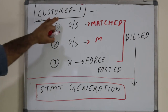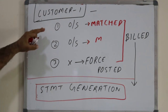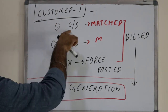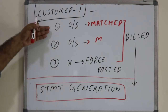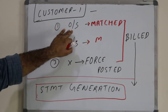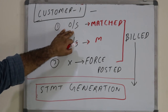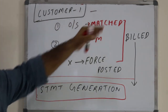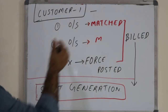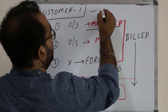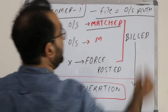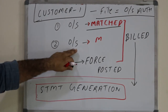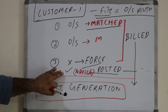When the CMS posts the incoming file, it processes transactions one by one. For the first transaction, it searches using fields like card number, amount, Retrieval Reference Number (RRN), STAN, authorization ID, and other ISO fields defined by the payment scheme. It finds a matching outstanding authorization — matched. The second transaction is also found and matched. But for the third transaction, the CMS cannot find an original transaction in the authorization system.